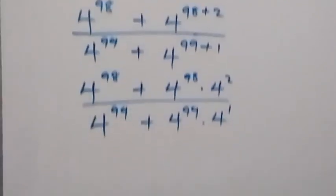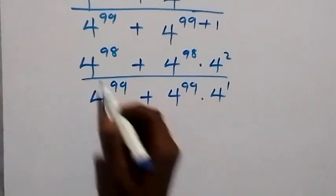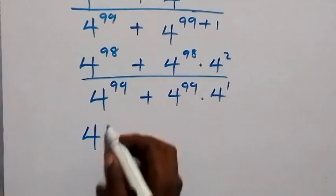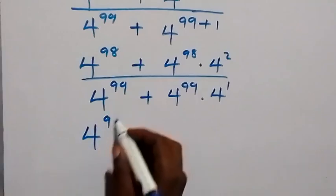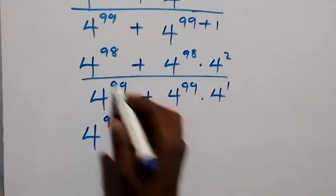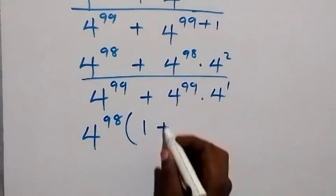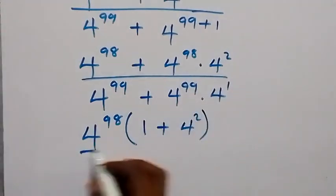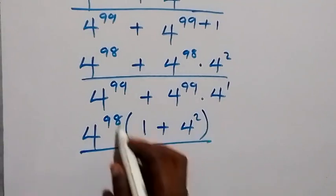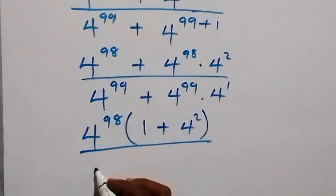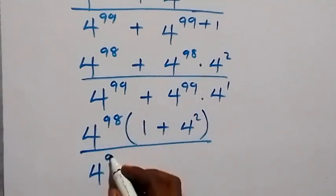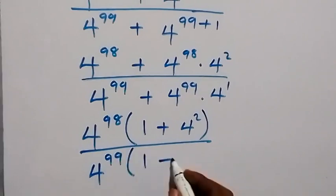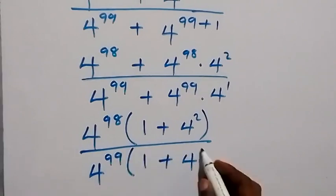Now we can factor what is common. Here 4 raised to power 98 is common, so we have 4 raised to power 98 into bracket 1 plus 4 raised to power 2, divided by 4 raised to power 99 which is common, giving 4 raised to power 99 into bracket 1 plus 4 raised to power 1.